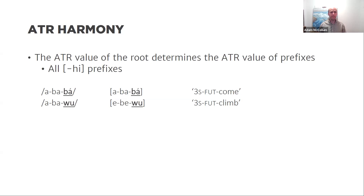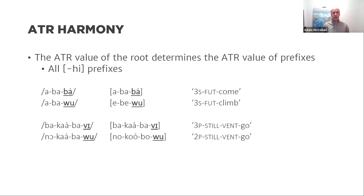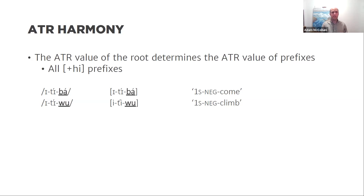For ATR harmony in Tutrugbu, the ATR value of the root — typically the rightmost morpheme — determines the ATR value of prefixes, so spreading initiates from the right and goes leftward. Height is crucial. If all prefixes are minus-high, spreading obtains all the way to the left edge of the word. If all prefixes are plus-high, harmony similarly obtains — we see regular alternations for first singular, negation, and first plural prefixes. If the initial syllable prefix is minus-high, ATR harmony spreads iteratively leftward, affecting everything within the word.